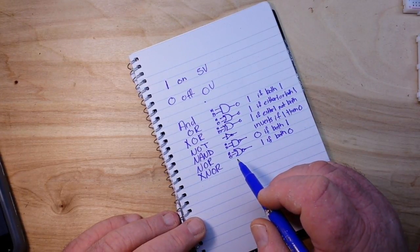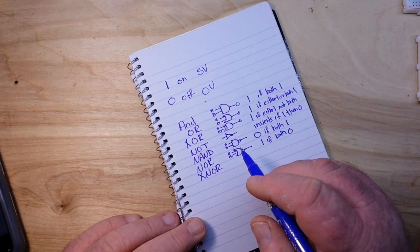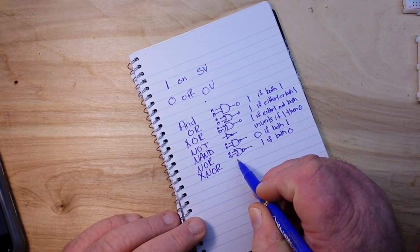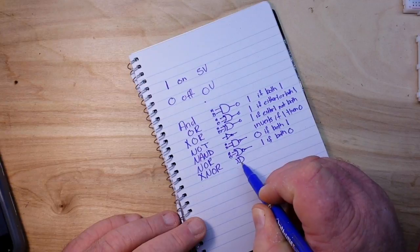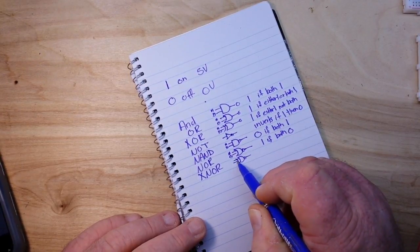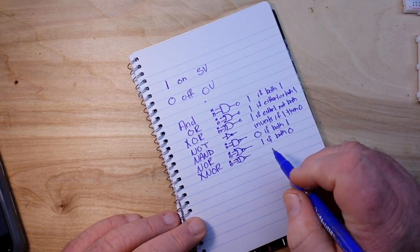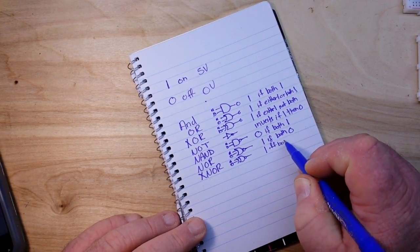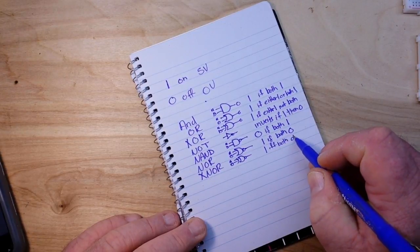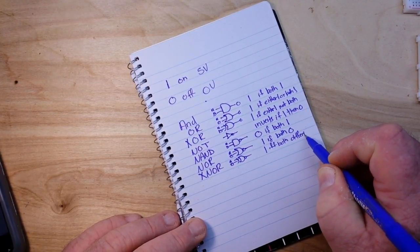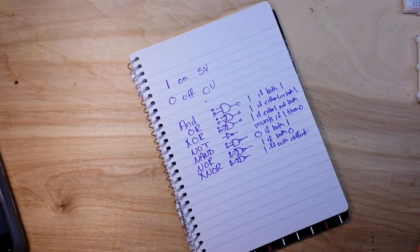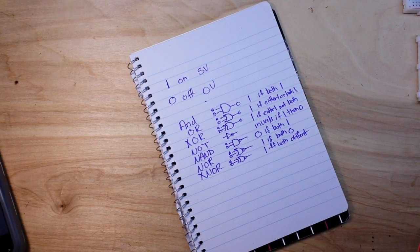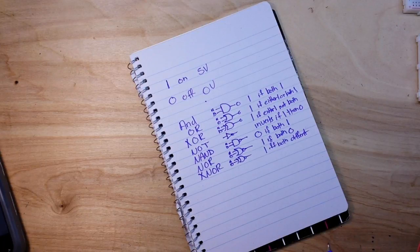And the final case we have the exclusive NOR which is an OR gate followed by an inverter. In this case it is true if both are different. So that's a lot to grab all at once but once you start working with it it gets really simple, and again this is the basics for all computers.